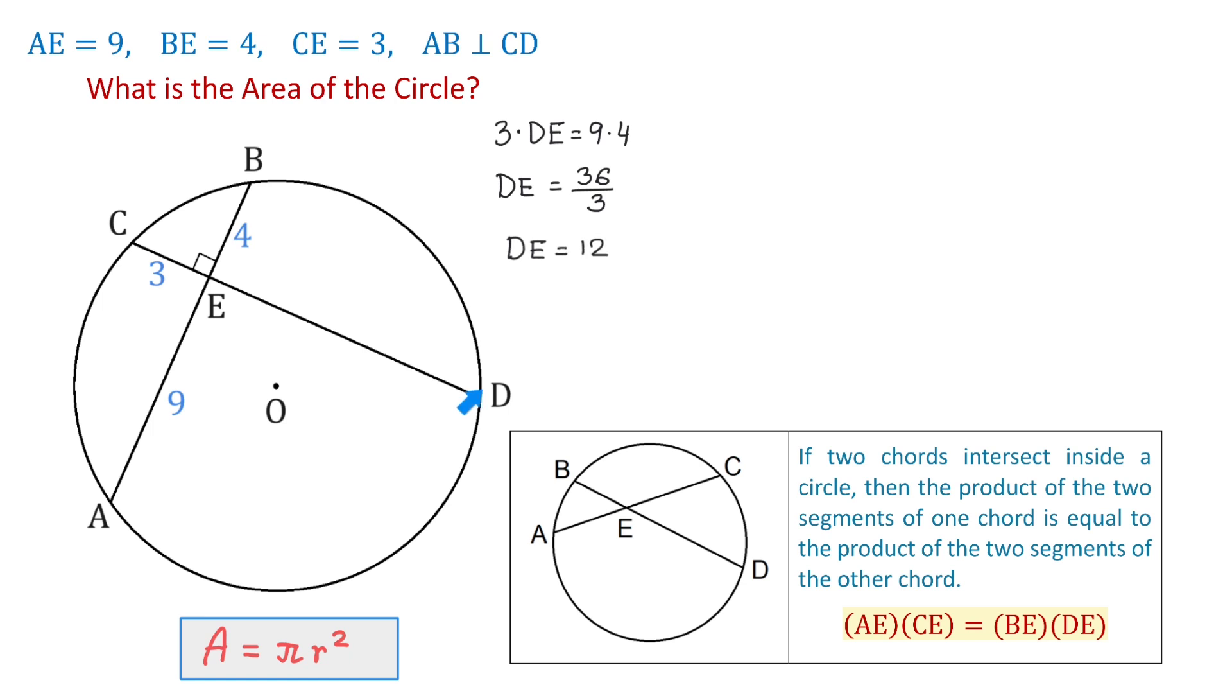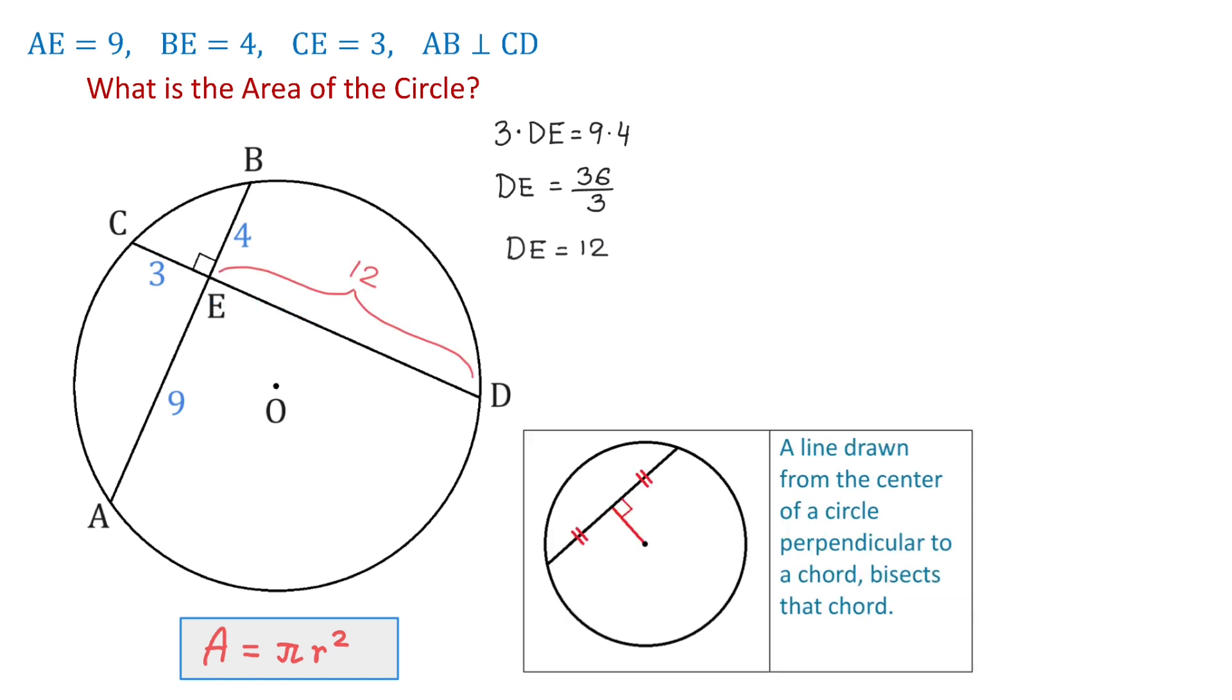We just found that DE equals 12. Now, we also know that if from the center of a circle we draw a perpendicular to a chord, then this perpendicular bisects this chord. In other words, this line segment is equal to this one.